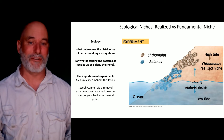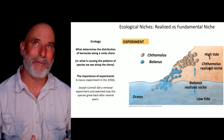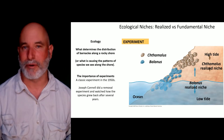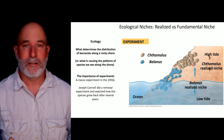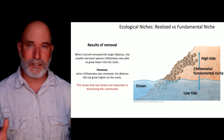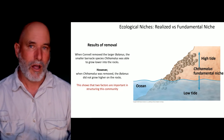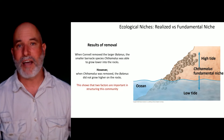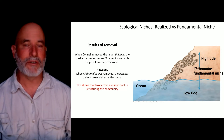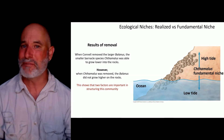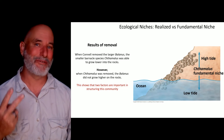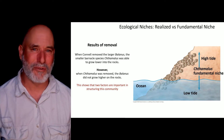Joseph Connell, back in the 1950s around the same time Hutchinson was defining the n-dimensional hypervolume, did a simple removal experiment. He removed the smaller Chthamalus and the larger Balanus from different rocks and observed what happened over several years. The results: when Connell removed the larger Balanus from lower on the rocks, the smaller Chthamalus grew down into those lower areas. On the flip side, when Chthamalus were removed from higher on the rocks, Balanus didn't respond — it always remained at a certain level along the waterline.